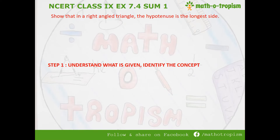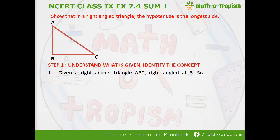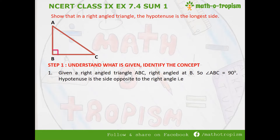The first step is understanding what is given and identifying the concept. We have been given: show that in a right angled triangle, the hypotenuse is the longest side. Given is a right angled triangle ABC, right angled at B, which means angle ABC is 90 degrees. We know that the hypotenuse is the side opposite to the right angle. Since the right angle is at B, the side opposite to it is AC. So AC is the hypotenuse.